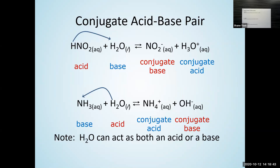In the reaction HNO₂ + H₂O → NO₂⁻ + H₃O⁺, HNO₂ donates a proton to form its conjugate base NO₂⁻. The conjugate base formula is just the acid's formula minus one H⁺, with the charge reduced by one. H₂O gains a proton to form H₃O⁺, its conjugate acid. Every acid has a conjugate base pair; every base has a conjugate acid pair — they differ by exactly one H⁺. Water is notable in that it can act as both an acid and a base.